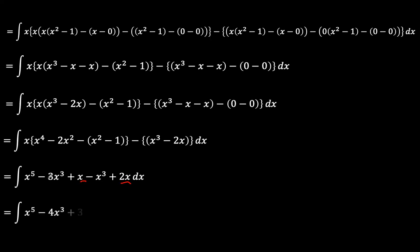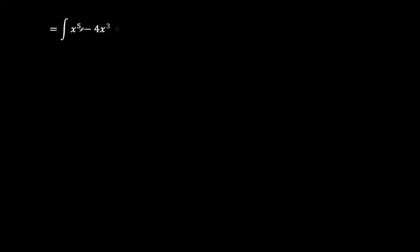We now have the integral of X to the power of 5 minus 4X cubed plus 3X, which is very easy to solve. Integrating: X to the power of 5 integrates to X to the power of 6 over 6; minus 4X cubed integrates to minus X to the power of 4; and plus 3X integrates to 3 over 2 times X squared, plus the integration constant C. This is the answer — an initially visibly challenging problem that, when you do your due diligence, falls down to a very simple expression. Thank you again for your attention.